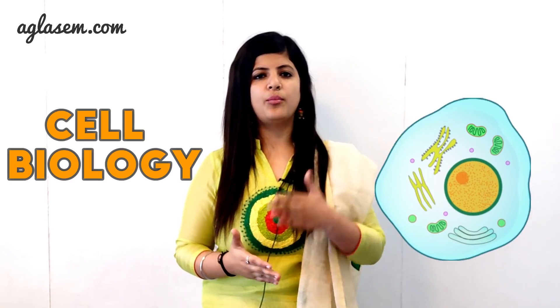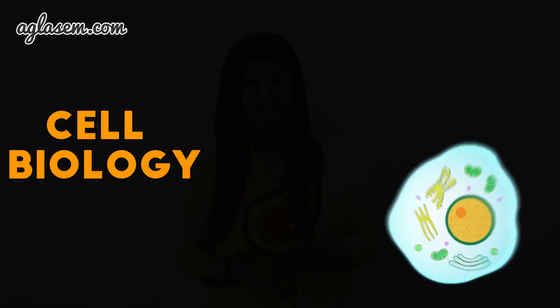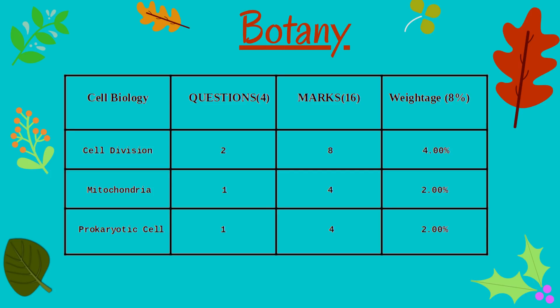Now let's come to the unit that carries around 16 marks. The unit is Cell Biology and the important topic is Cell Division. The unit name is Cell Biology, with a total of 4 questions and marks weightage of 16. Topics are: Cell Division (2 questions, 8 marks), Mitochondria (1 question, 4 marks), and Prokaryotic Cells (1 question, 4 marks).